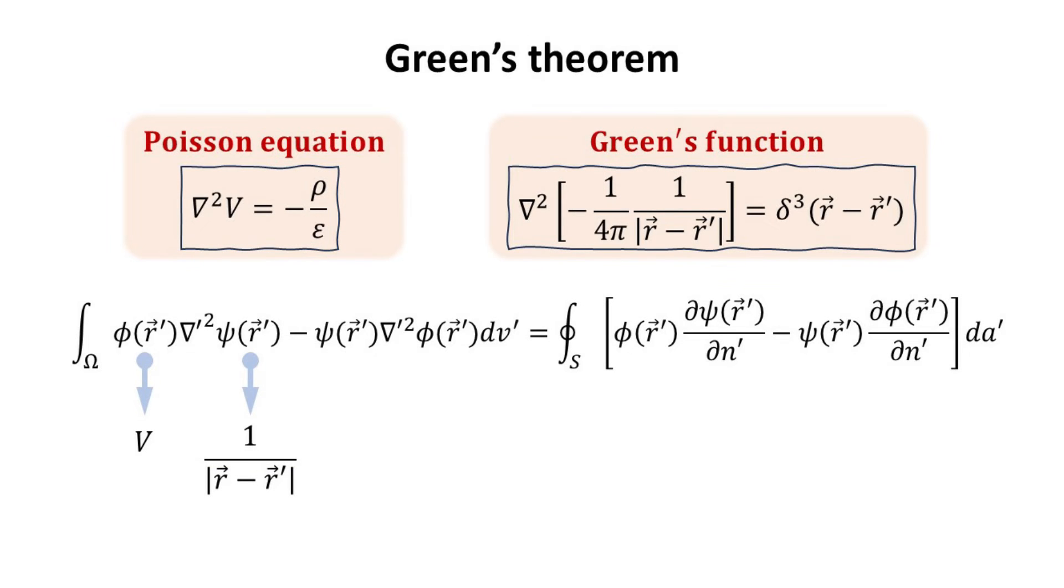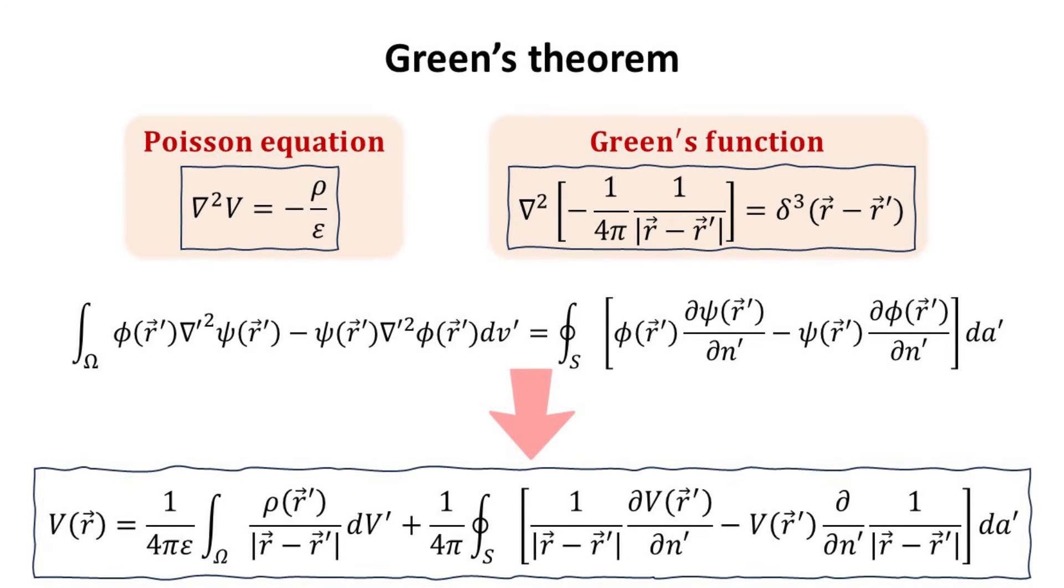Using the Green's Theorem and letting the phi and psi functions be the potential V and the Green's function, one can arrive at the well-known expression for the potential of the gradient field. The potential depends on the source term as expected, but also depends on the boundary values and derivatives of the potentials. The latter is what is known as the boundary conditions. They are called the Neumann and Dirichlet boundary conditions. We only need to specify one of them to have a unique solution of the gradient field.